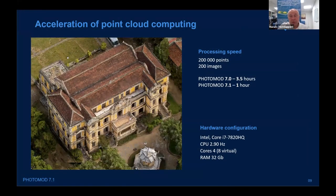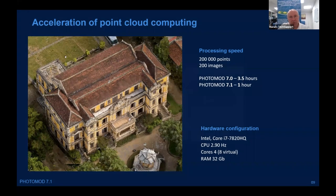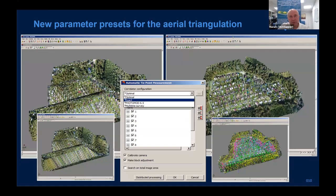Acceleration sample: on the same project with the same hardware configuration, processing took 3.5 hours in version 7.0 and 1 hour in version 7.1. There are also new presets for tie point measurement parameters: optimal, exact, multi-time, and also the classic parameters from PhotoMOD 6.5 — parameters are hidden from the customer but can be edited if necessary.